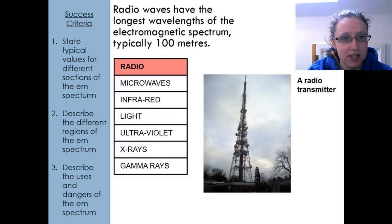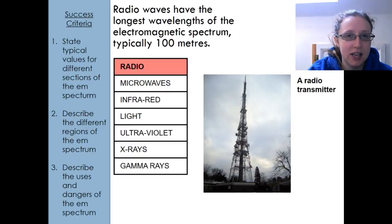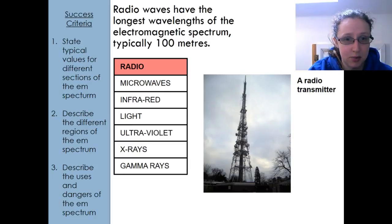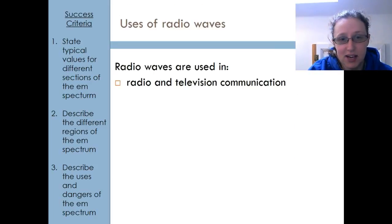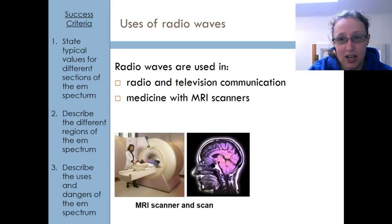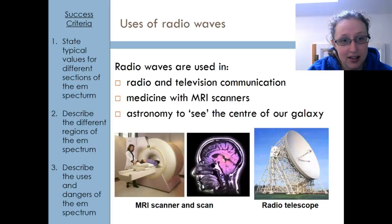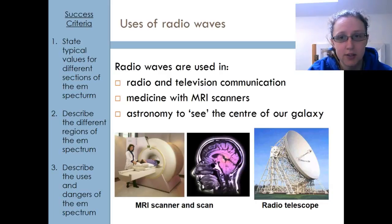Radio waves are the longest and typically their wavelength is about 100 meters. Uses of radio waves include radio and TV communication, inside MRI scanners, and astronomy, giving us a way to see more of the universe.